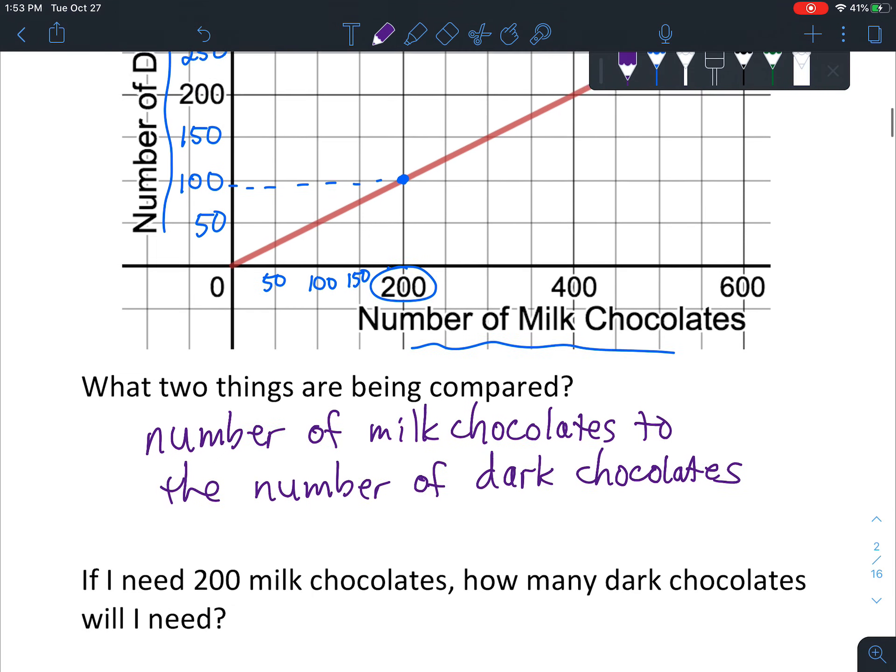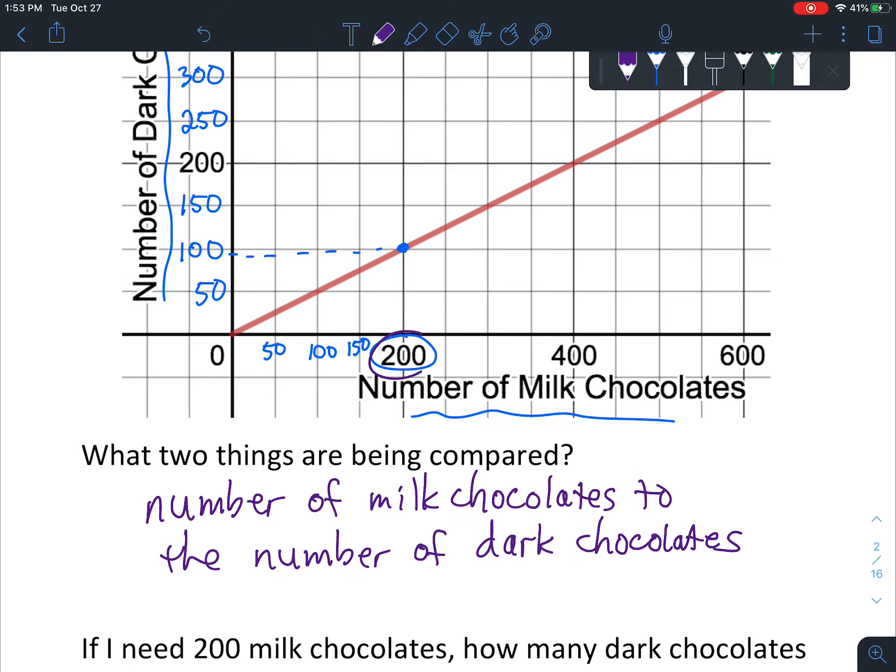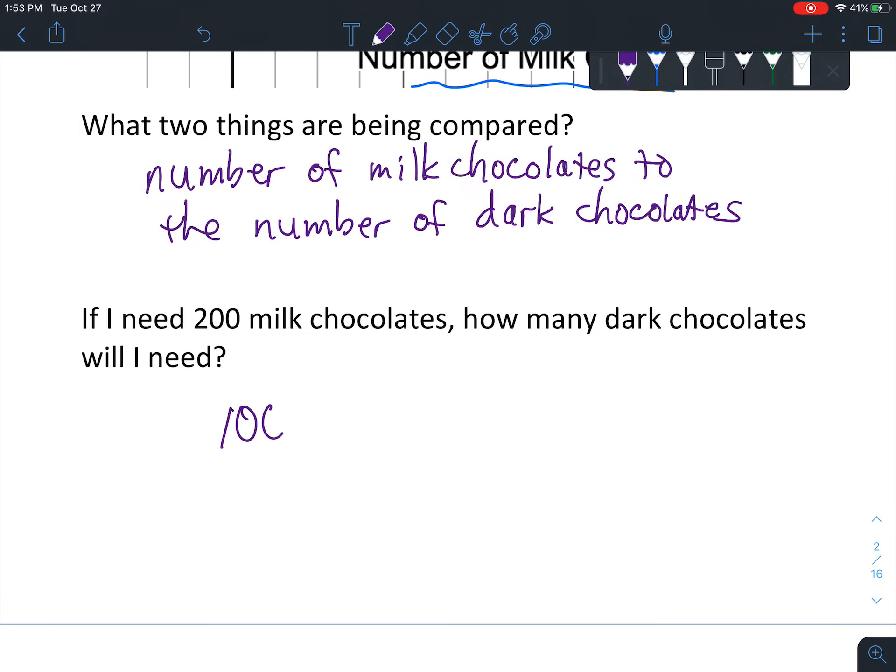And it says here, if I need 200 milk chocolates, how many dark chocolates will I need? So what you do is you look at the input of 200 for milk chocolates, kind of follow it up until it hits the line, and then go across, and it tells us 100. So you need 100 dark chocolates.